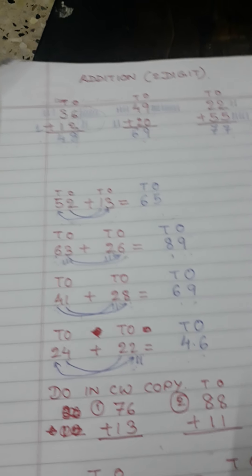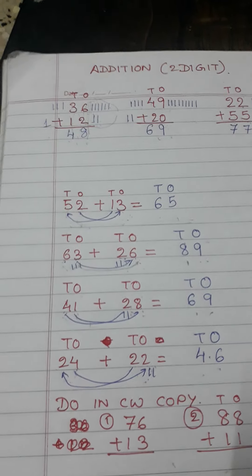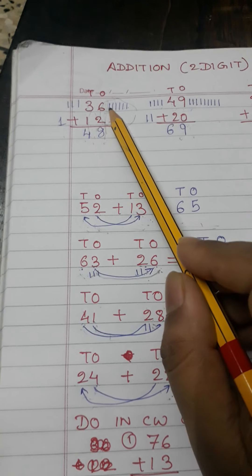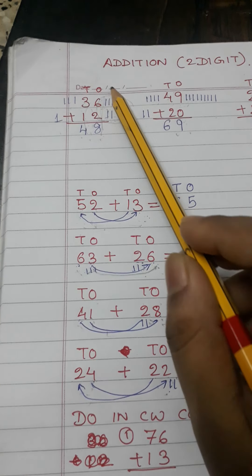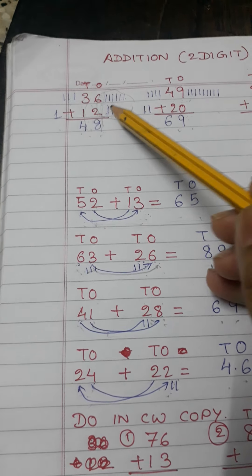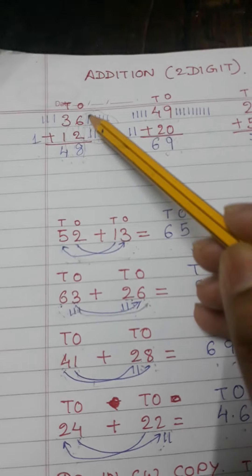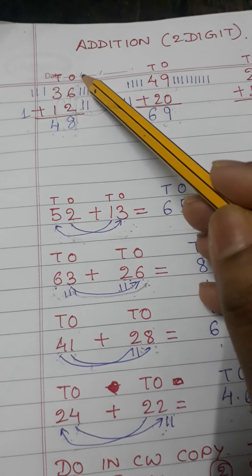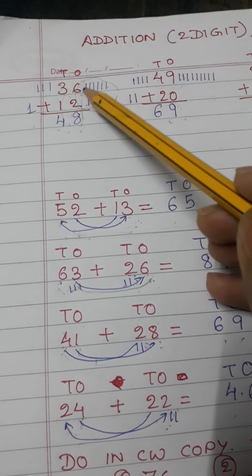Namashivai students, today our topic is addition with two digits. Here I have 36 plus 12, ones and tens. Six and two comes within ones, and in tens place three and one. First I will start with ones: six